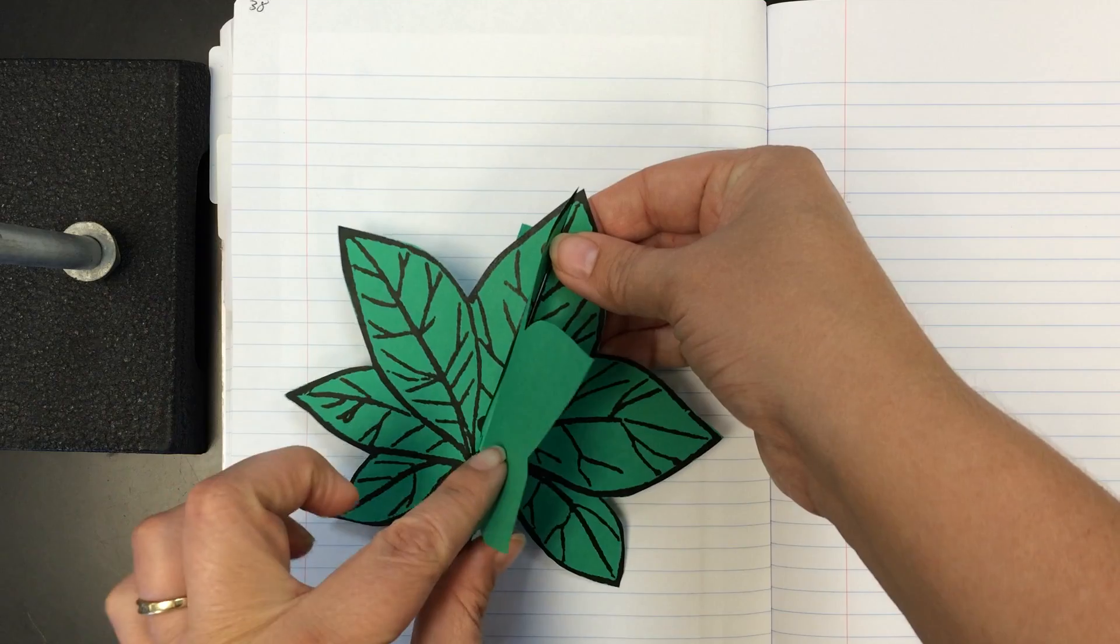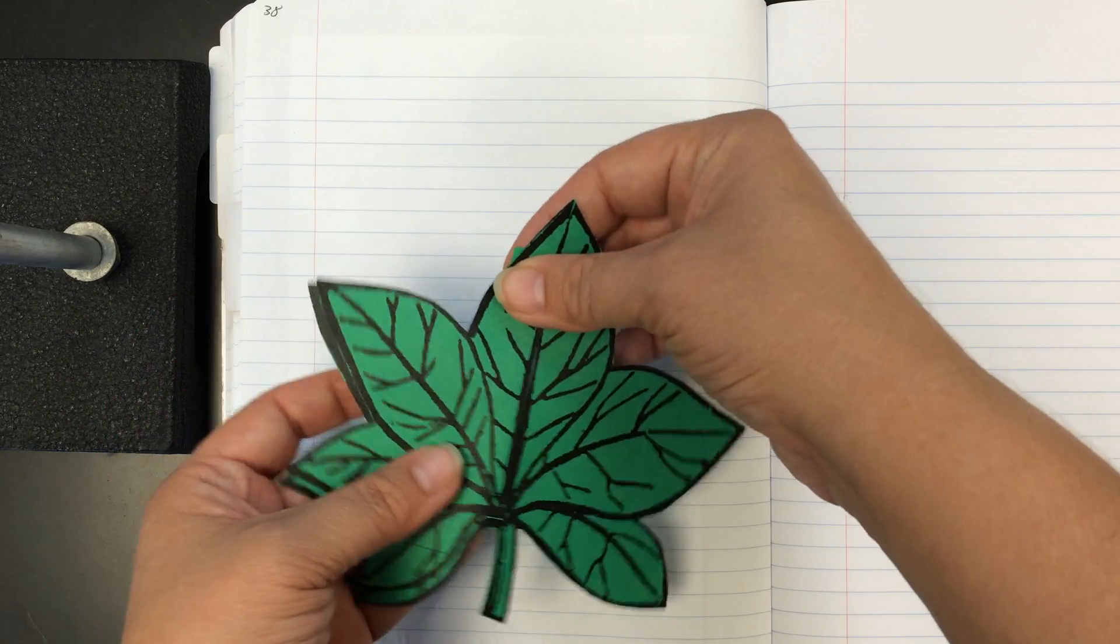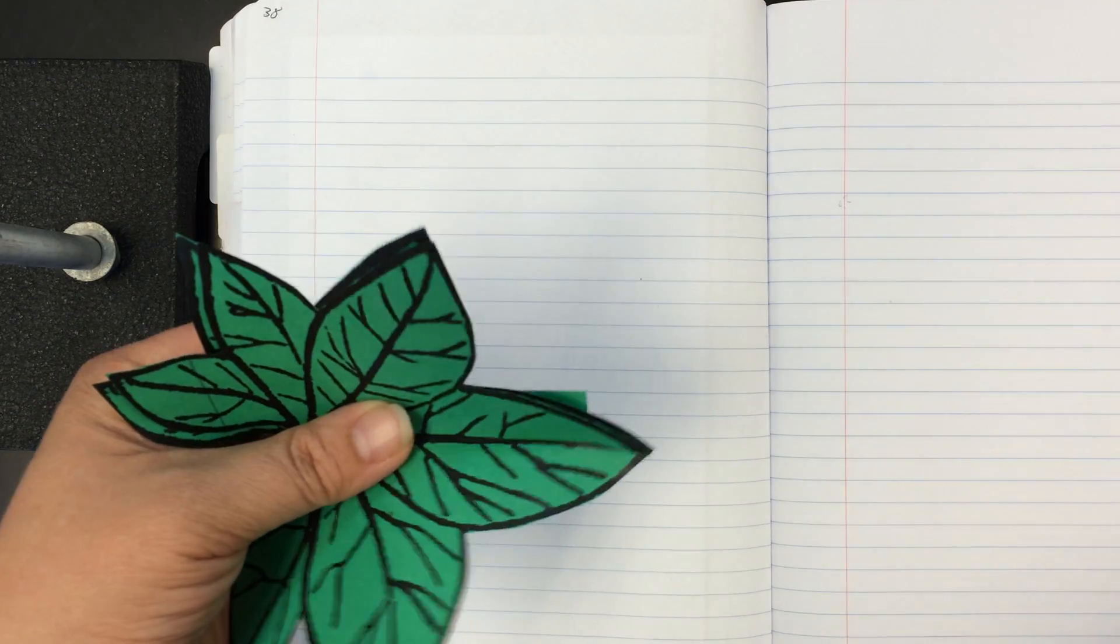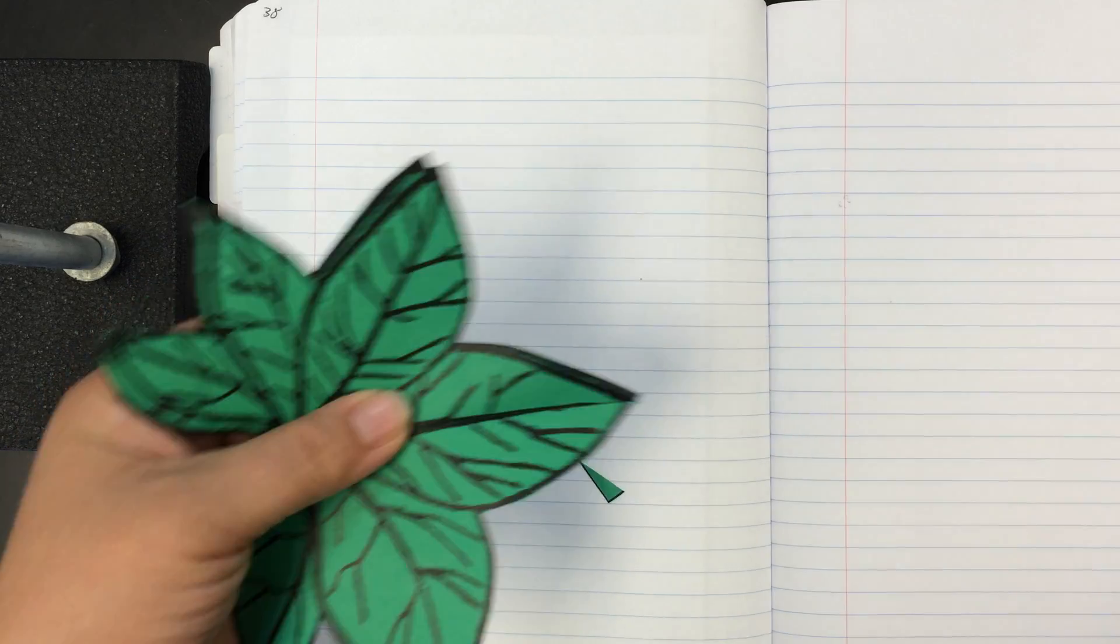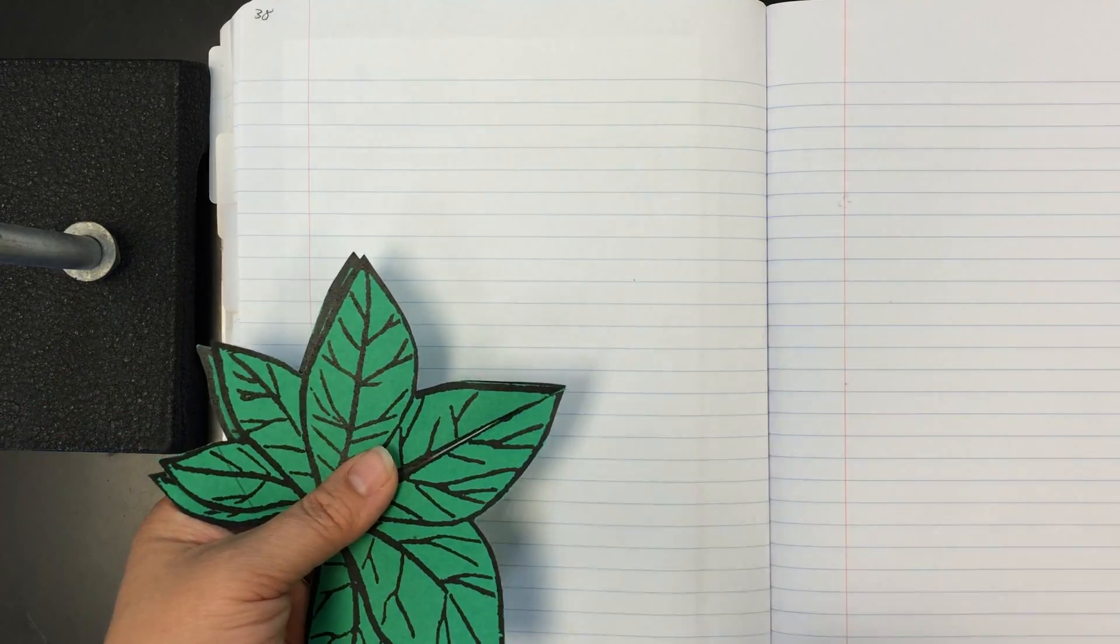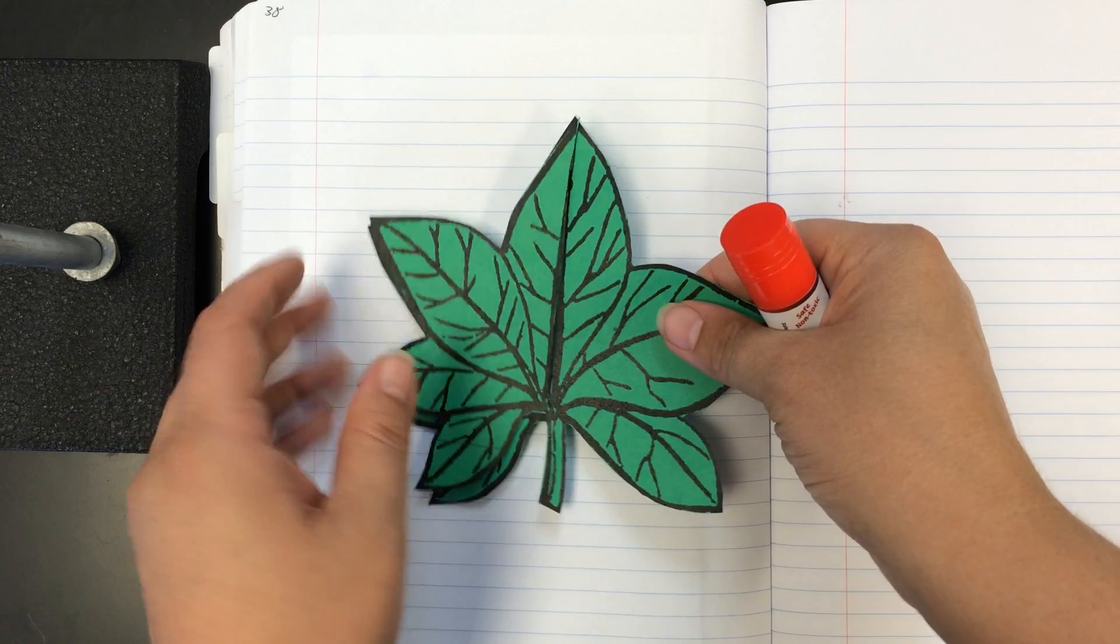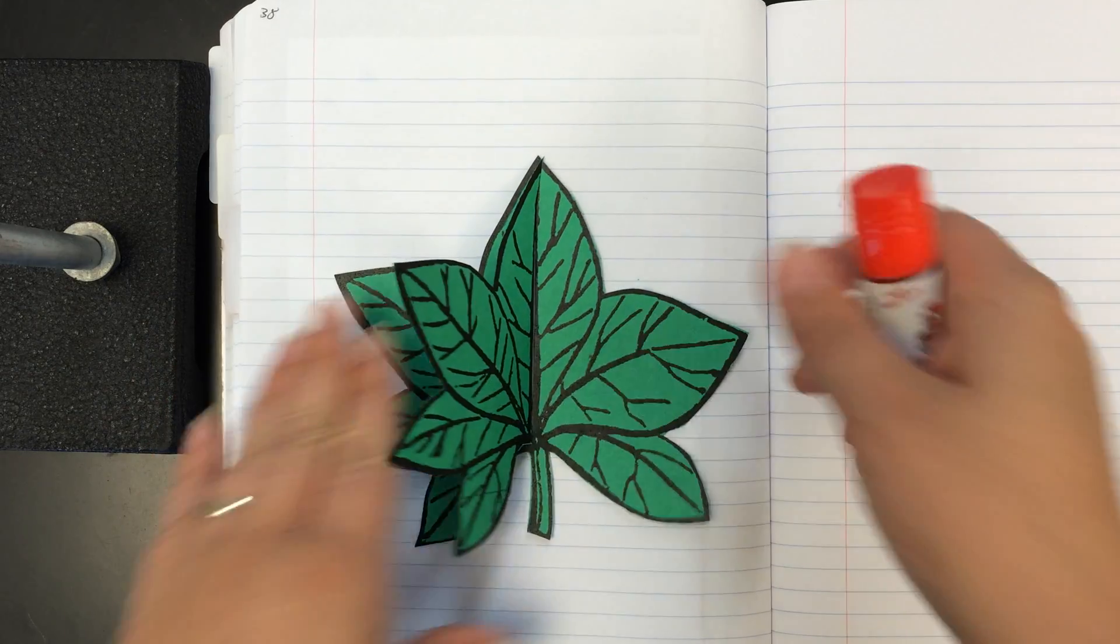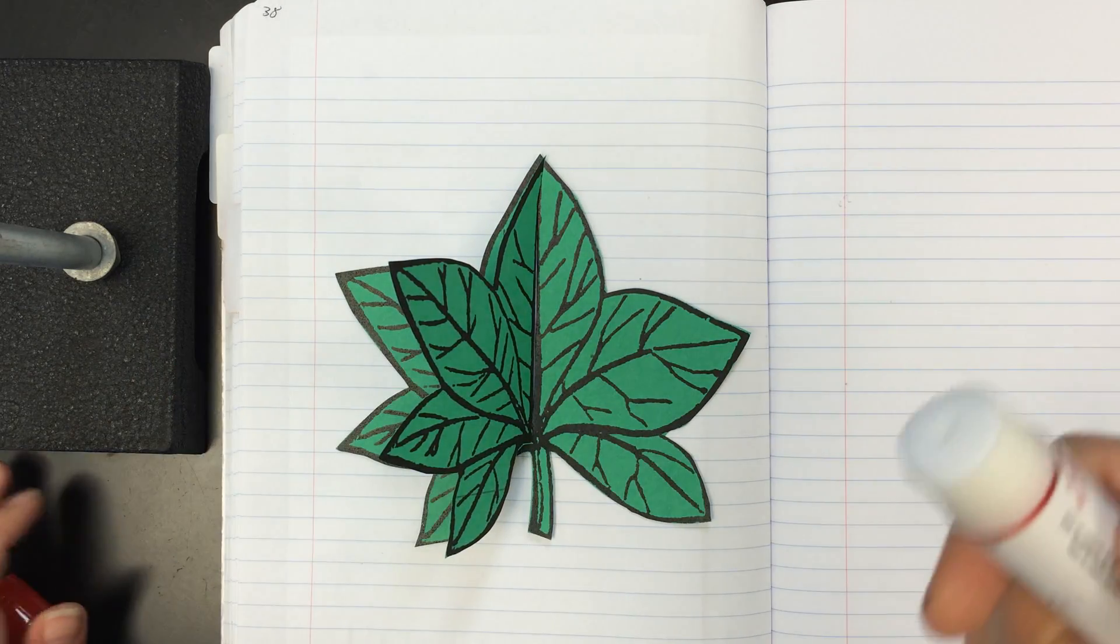Alright, so we're going to get it together like this. So now I've got a little leaf with a little flap. We're going to glue it into your notebook. But we're only going to glue the big leaf, and only the left side of the big leaf. And I'll show you why in a minute.